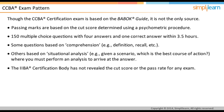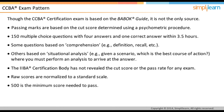It is to be noted that the IIBA certification body will not publicly reveal the cut score or the pass rate for any exam. Raw scores are normalized to a standard scale. 500 is the minimum score needed to pass, not the maximum possible score, and is mentioned in the failed exam result. We will focus on the information about this tutorial in the next slide.